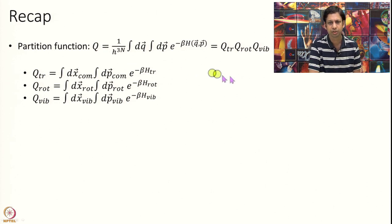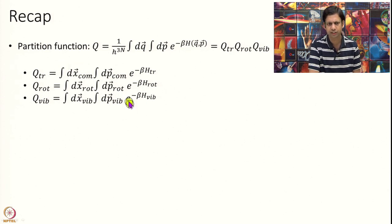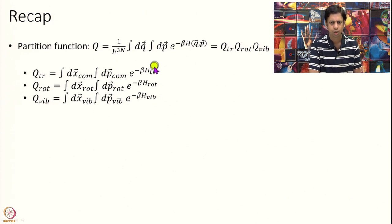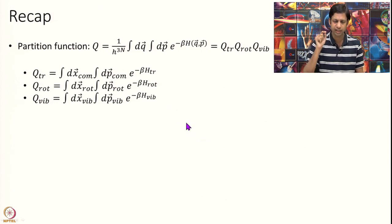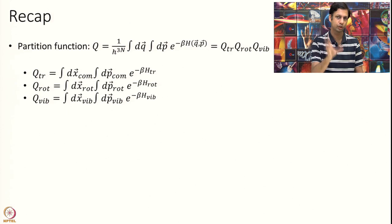So you get Q equal to Q_translation times Q_rotation times Q_vibration, where the translational one is an integral over 3 degrees of freedom — 3x and 3p, a 6-dimensional integral over the translational Hamiltonian — the rotational one is over the rotational Hamiltonian, and the vibrational one is over the vibrational Hamiltonian. Today we are going to calculate these exactly; we are in a position to actually do these integrals.